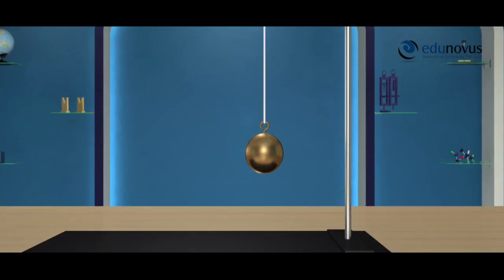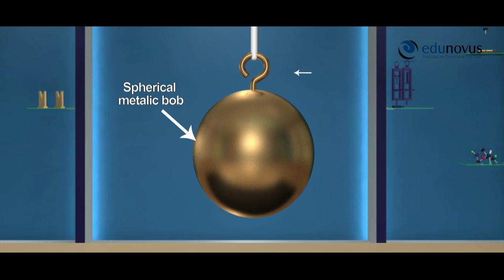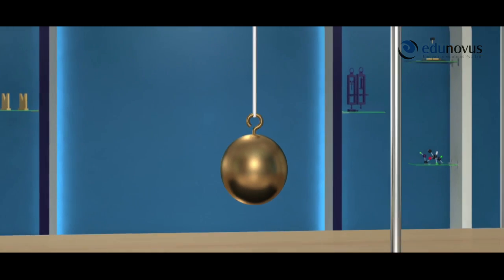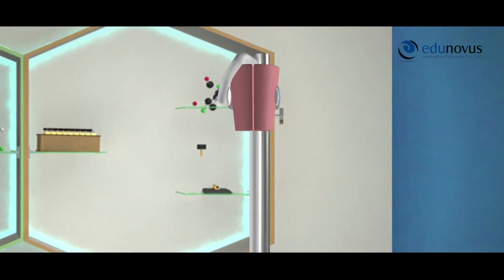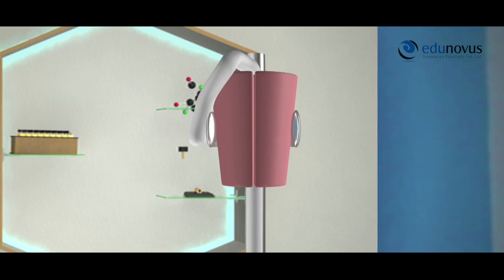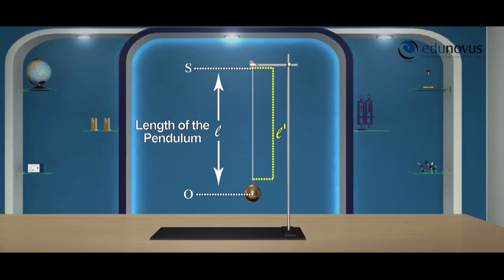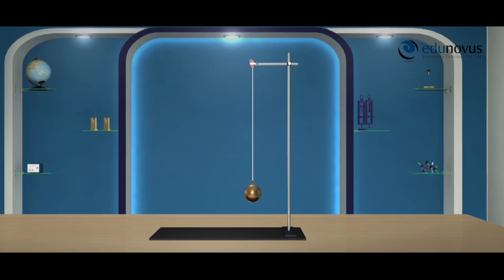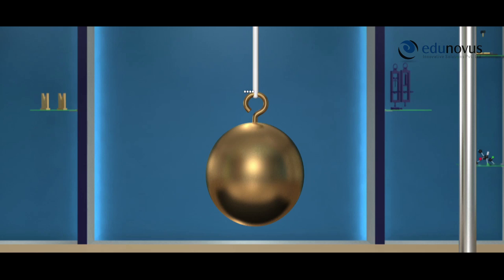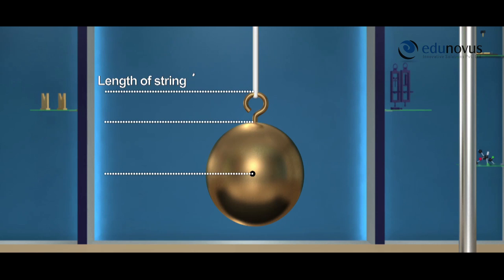A simple pendulum consists of a small spherical metallic bob suspended by a string. The other end of the string is passed through a split cork fixed tightly in the clamp of a retard stand. The length of the pendulum L is the distance between the point of suspension S and the center of the bob O. L dash is the length of the string. Therefore, the length of the simple pendulum is given by: length of the string L dash, plus length of the hook H, plus radius of the bob R.